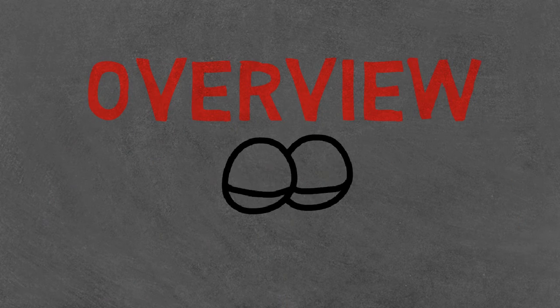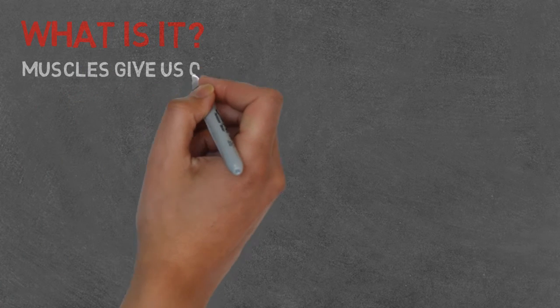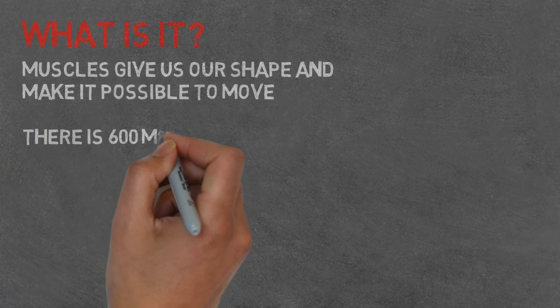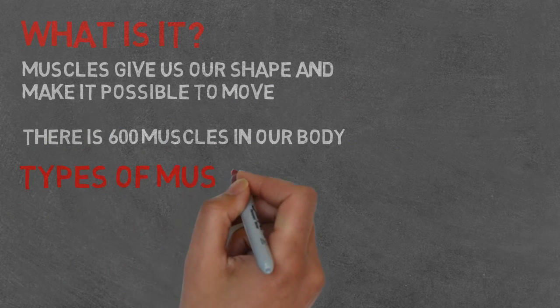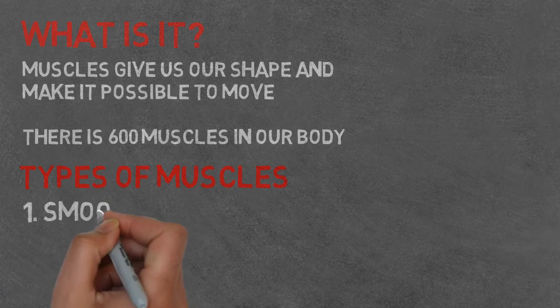Okay, an overview so we can see if you've all been listening. What is it? Muscles give us our shape and make it possible to move. There are 600 muscles in our body. Types of muscles. One, we have smooth, which are involuntary, meaning we have no conscious control over them.